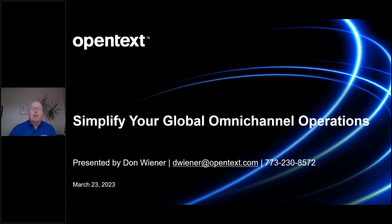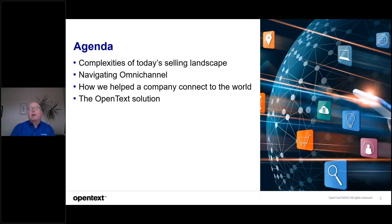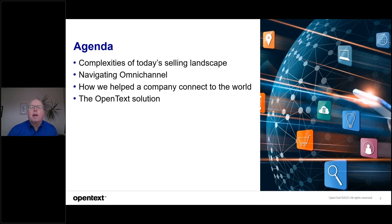For the next few minutes, we're going to discuss how we can simplify your global omnichannel operations and how OpenText can be your partner to do that. We're going to talk about the complexities of today's selling landscape — we know how we shop has changed and it's going to continue to change. This leads us to navigating omnichannel. Then we'll jump into a case study, talking about how we helped one small company connect to the world and grow, and then finish up with the OpenText solution.